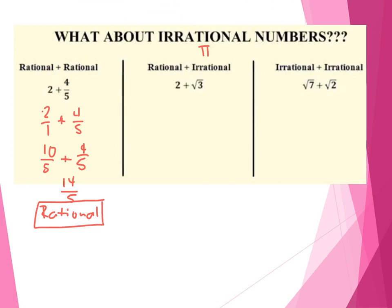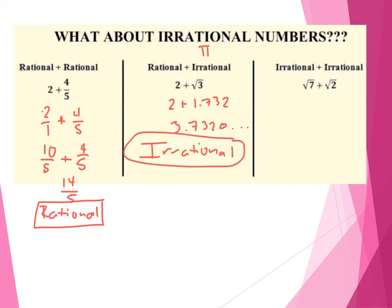So what happens when I take a rational number such as 2 — which is 2 over 1 — plus radical 3, the square root of 3? Well, 2 stays the same. The square root of 3, if you punch it into your calculator, is 1.73205... When I add these decimals together, it's going to give me 3.7320... So the key point: when you add a rational plus an irrational number, the result you get is an irrational number, because we have to take into account those extra decimal places that are running on, not ending, and not having a repeating pattern.